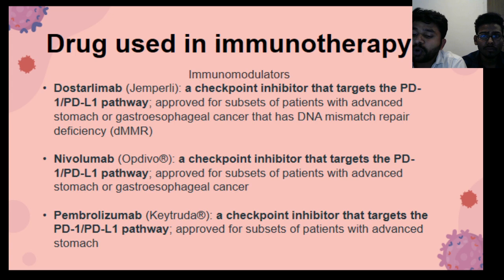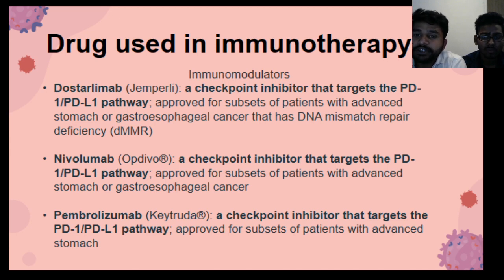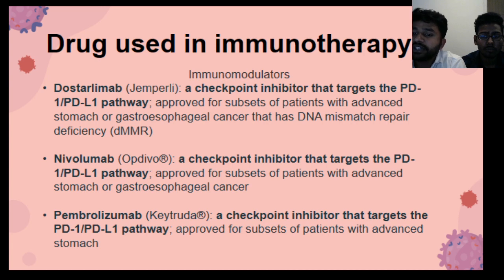To block this binding of PD-L1 to PD-1 with an immune checkpoint inhibitor allows T-cells to kill tumor cells. To prevent this binding we use immunomodulator drugs, such as dostarlimab, nivolumab, and pembrolizumab. These drugs inhibit the PD-1/PD-L1 pathway.